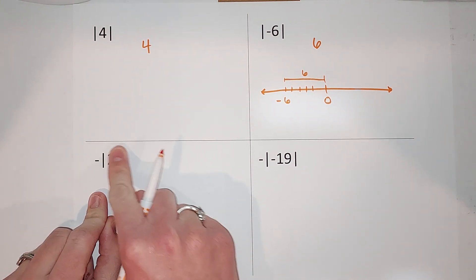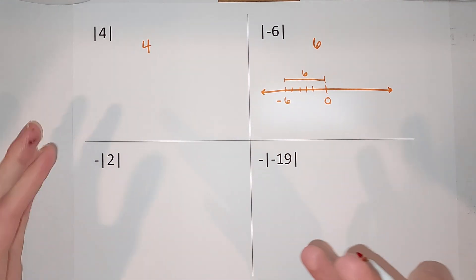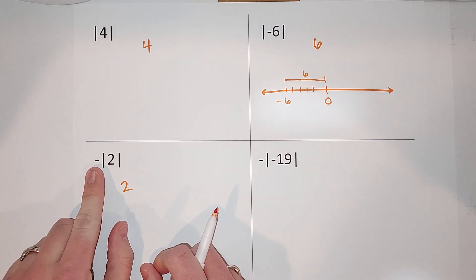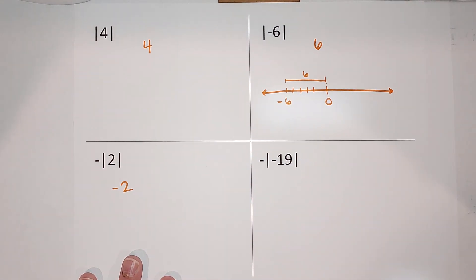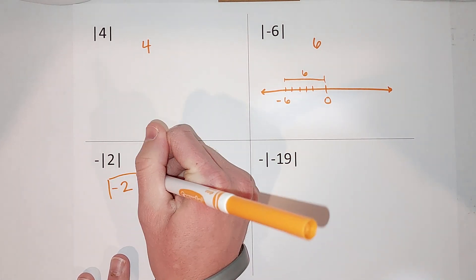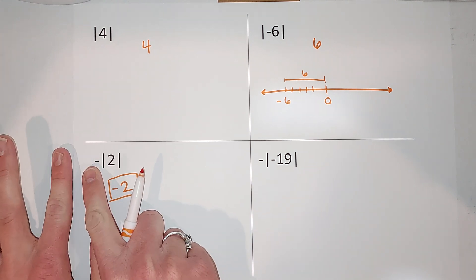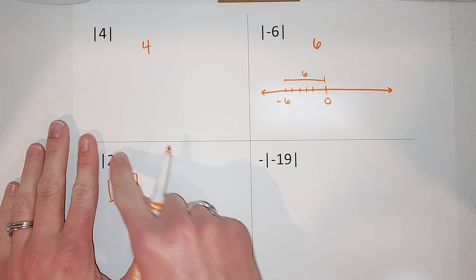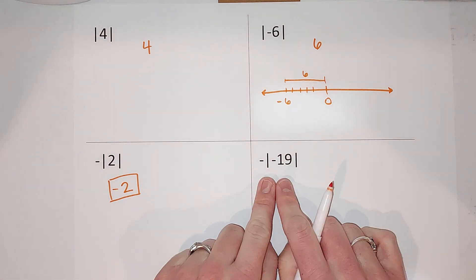We solve the inside first: what is the absolute value of two? The distance of two from zero is just two. But we're not quite done — there's a negative on the outside. So the answer becomes negative two. The answer to the inside was positive, then we multiplied that negative one on the outside, giving us negative two.